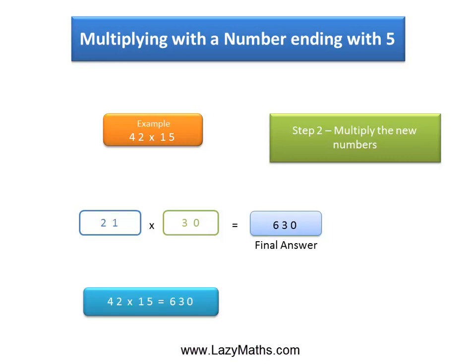So 42 times 15 equals 630, as well as 21 times 30 equals 630.